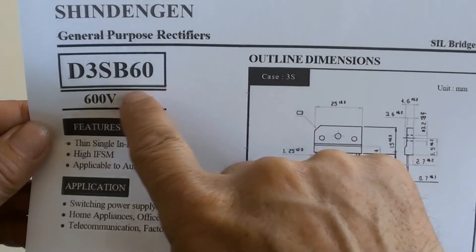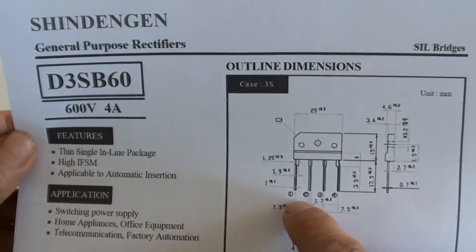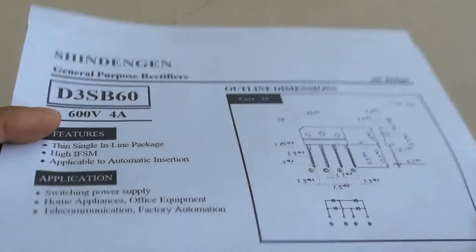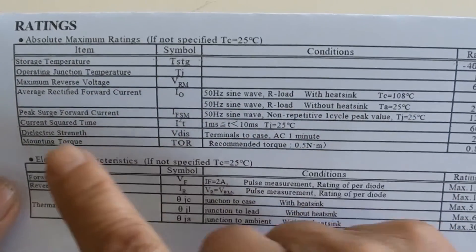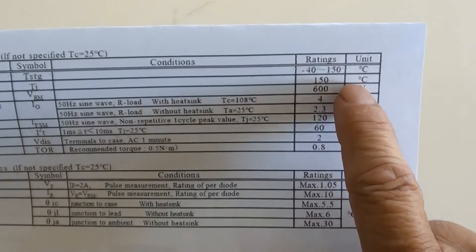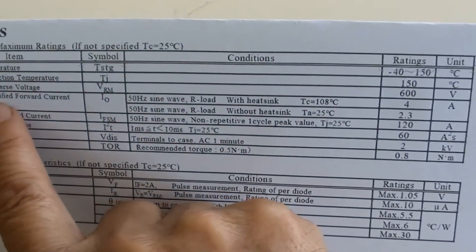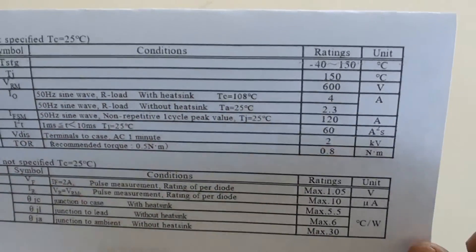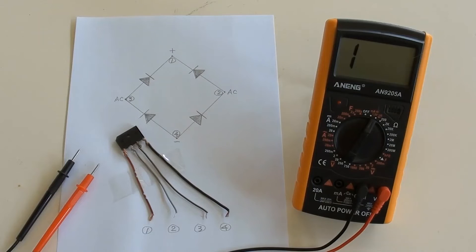Here is its datasheet. Max voltage is 600 volt. Current is 2.3 amperes without heatsink.